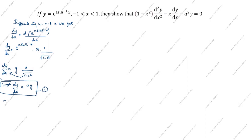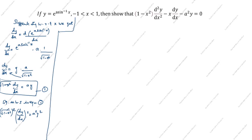Next, squaring both sides of equation 1 to remove the square root: (√(1-x²))² · (dy/dx)² = a²y². The square and root cancel, giving us (1 - x²) · (dy/dx)² = a²y². This is equation 2.